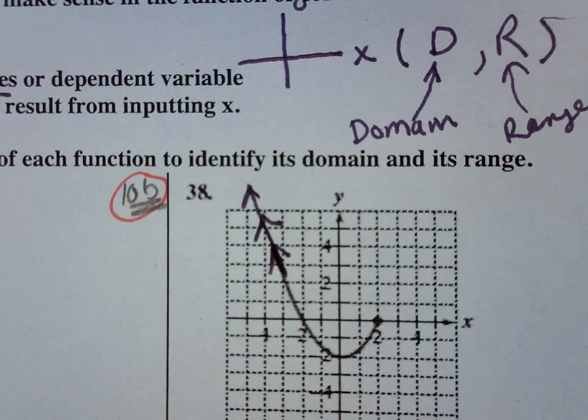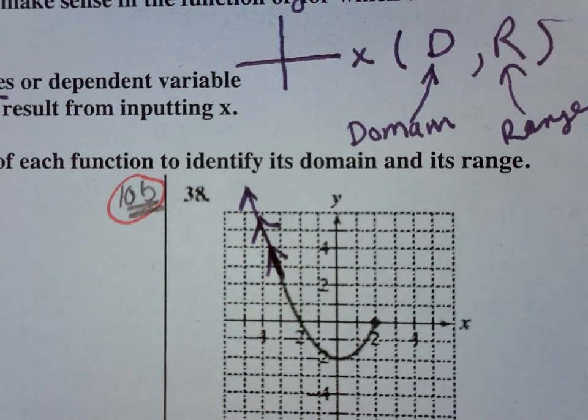But then it just continues to go on forever and ever. So an arrow at the end, basically, look at the direction it's going. So it's going to continue going up or it's going to continue going down one or the other. And that's going to affect your range more than anything else.